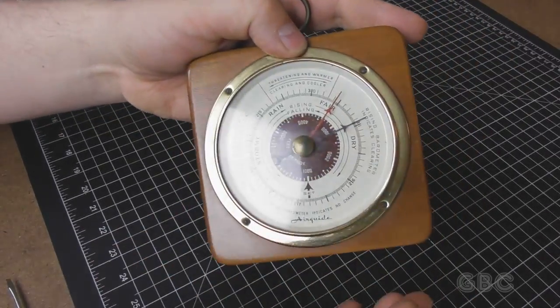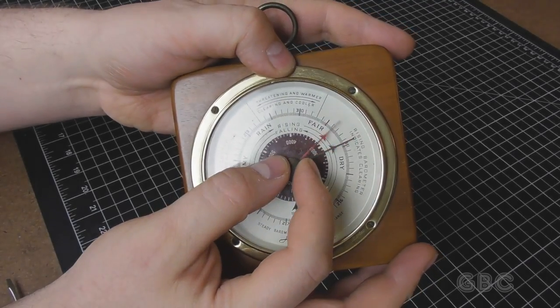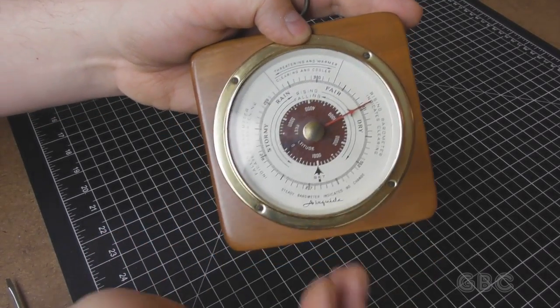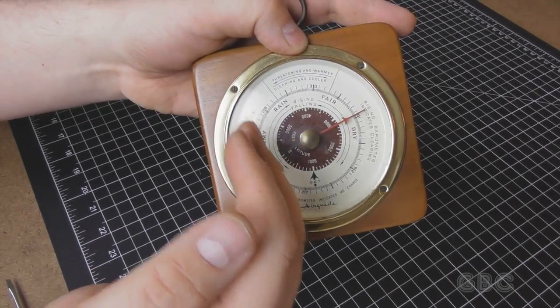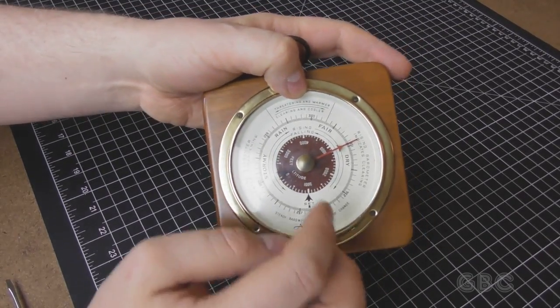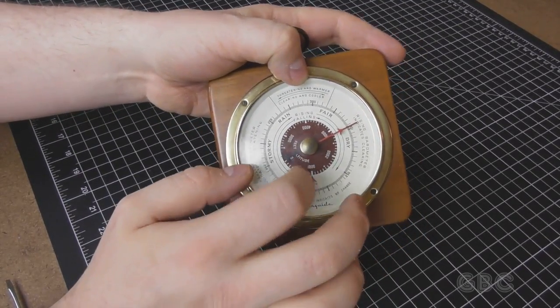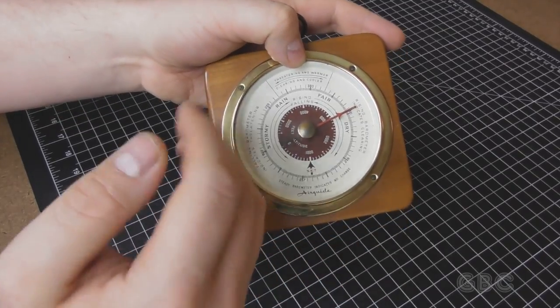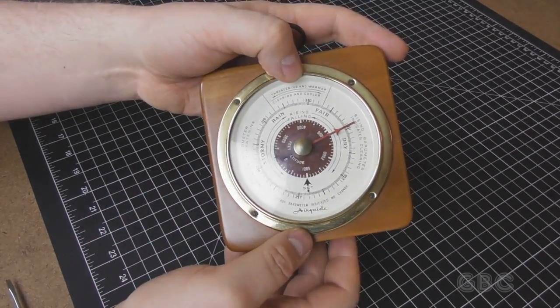Once everything is set, you would adjust the red needle to line up with the black needle. Then over time, you can see whether the barometric pressure is rising or falling. This one tends to stick a little bit. I'll have to tap it to get the needle to move up or down.